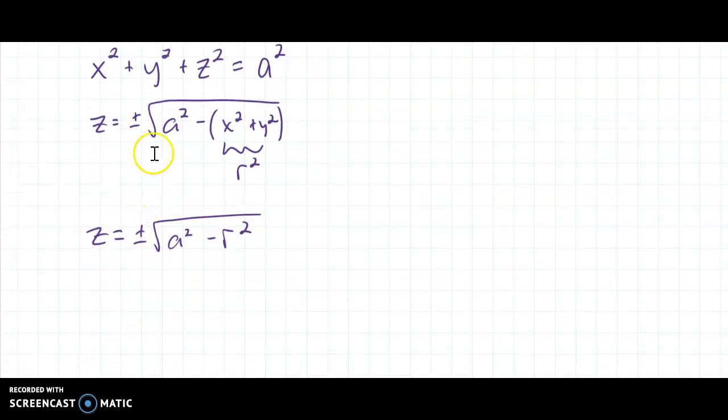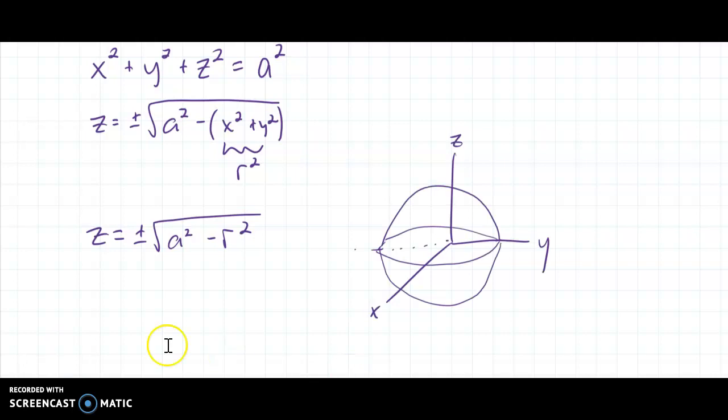So the next thing I need to do is figure out my integral. Well, if I've got a sphere, try to draw it, not the greatest sphere, maybe I'll redo that. I've got this sphere right here of radius A, so this would be A right there, and that would be A.